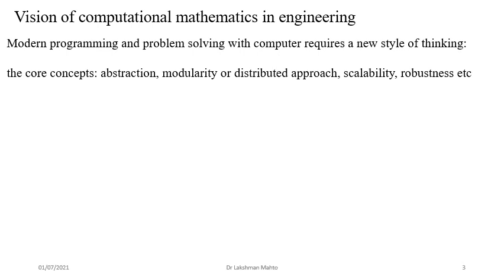Computational thinking demands core concepts. The first is abstraction — you take one problem and try to get an abstract idea to help generalize it. Then, if a problem is very big, you distribute it into smaller sub-problems, solve those sub-problems, and combine them to get the solution of the original problem.